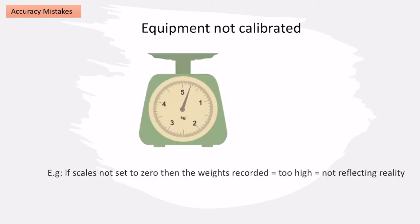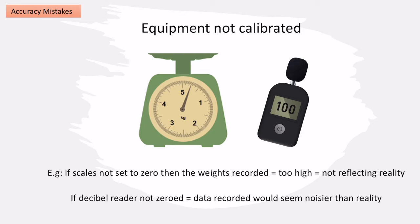Another common mistake is when we don't have our equipment calibrated. For example, if I was measuring the weight of anything using scales and I hadn't set it to zero, then anything I weighed would be recorded as slightly too high — it wouldn't reflect the real weight. Similarly with a decibel reader, if I don't zero it, anything I record would seem slightly noisier than in reality. So we need to use the equipment correctly, record results accurately, and make sure any equipment is correctly set up.